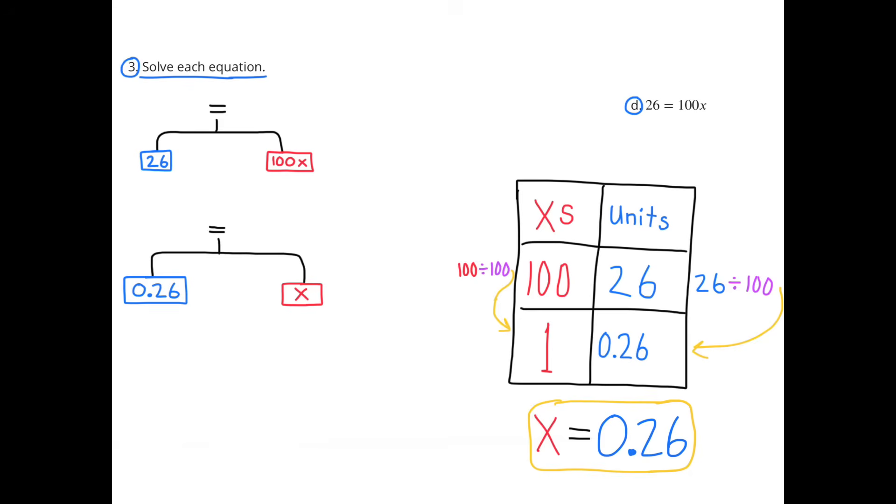x equals 26 hundredths. I also represent this on the left with a hanger. 26 units is in balance with 100x's. And below it, 26 hundredths units is in balance with 1x. So x equals 26 hundredths.